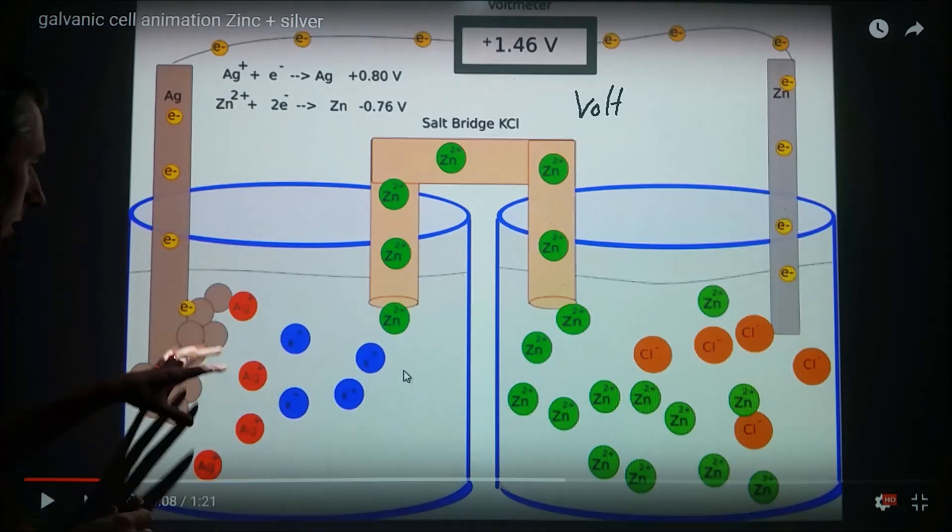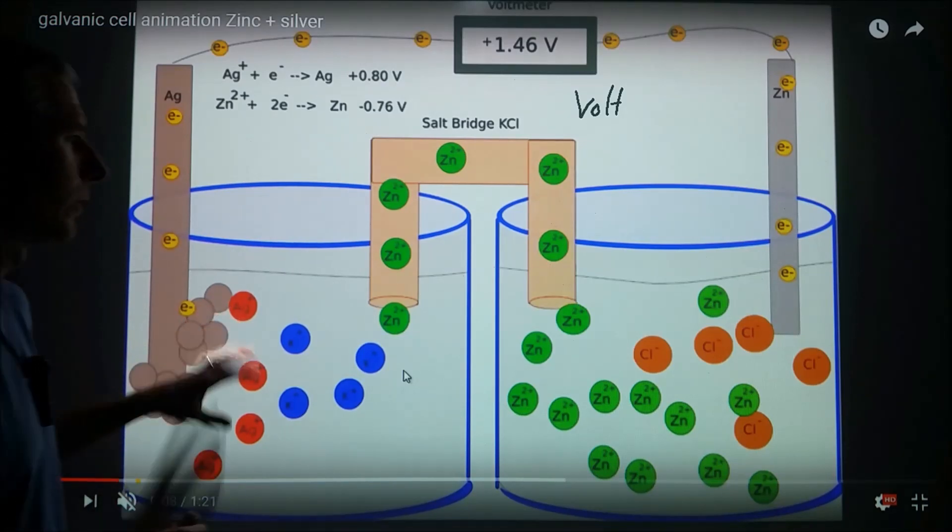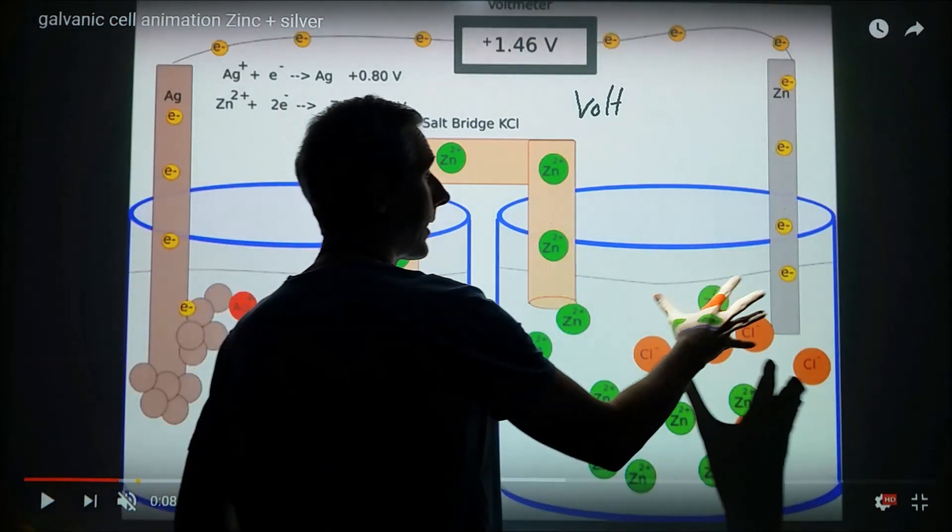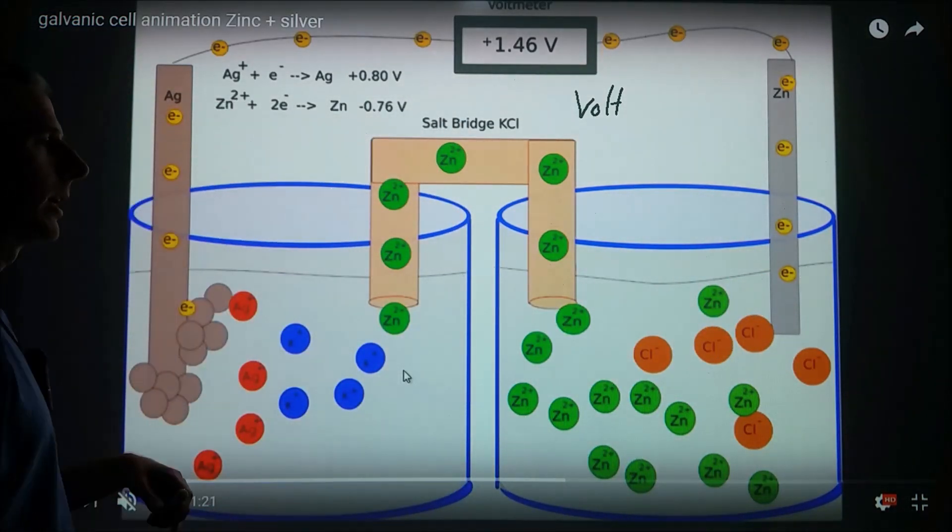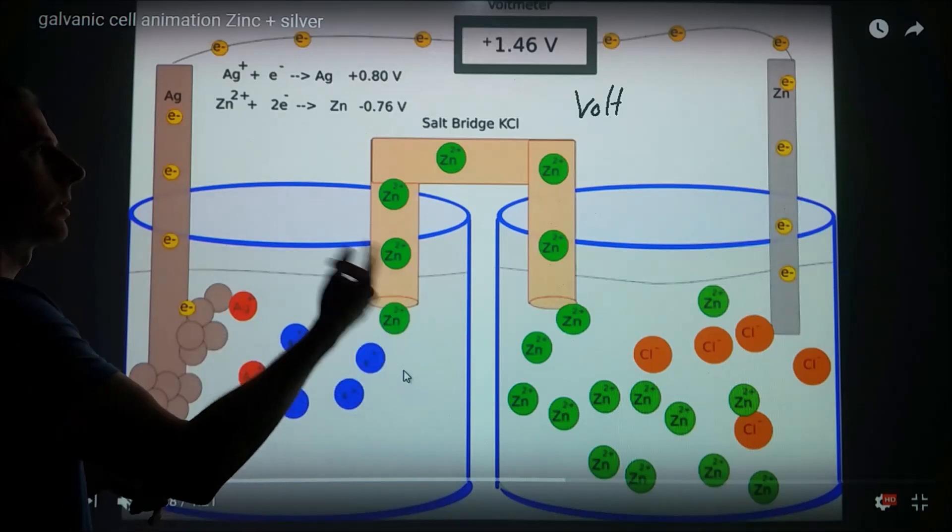The larger the pull from the silver cations and the weaker the pull on these zinc cations, the larger potential difference there will be and the greater amount of energy change will occur.